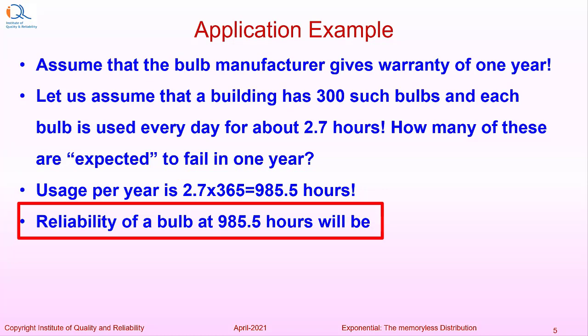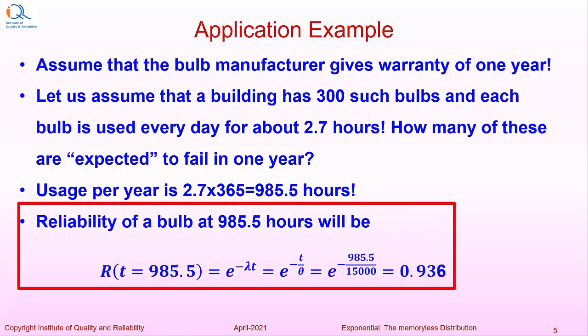Reliability of bulb at 985.5 hours will be e to the power minus lambda t that is equal to e to the power minus t by theta and that is equal to e to the power minus 985.5 upon 15,000 that gives us a reliability of 0.936.